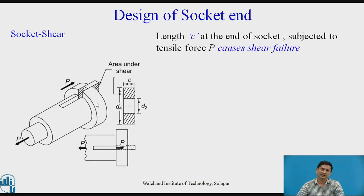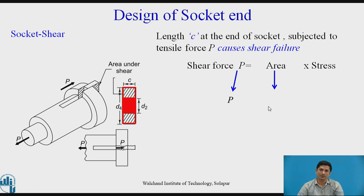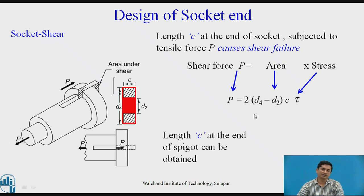Socket - we can have the same failure for the socket. However, the area is different: D4 multiplied by C minus this D2C. Only that bracket of shear area will change. And this red zone we need to reduce from the total area: 2 times (D4 - D2) into C. We can calculate C from this equation.